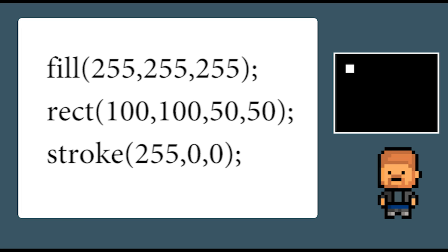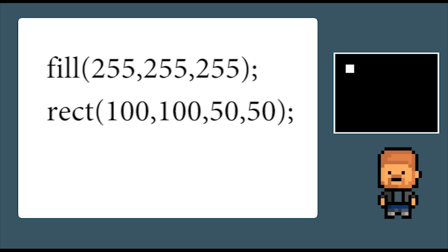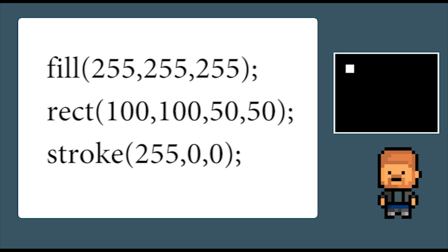Let's look at a logic error in Processing. We want to draw a white rectangle with a red outline, but for some reason we get the white rectangle, just not the red outline. The code we have is: fill 255 255 255; rect 100 100 50 50; stroke 255 0 0. So the fill command says to the brush: we want to draw all future shapes with a white filling. The next command, rect, draws the rectangle 100 pixels across and 100 pixels down on the screen, sized 50 by 50 pixels. And finally, stroke tells Processing we want the outlines of all future shapes to be red. Do you get it? We have drawn the rectangle before we have told it what color we want the outline to be.